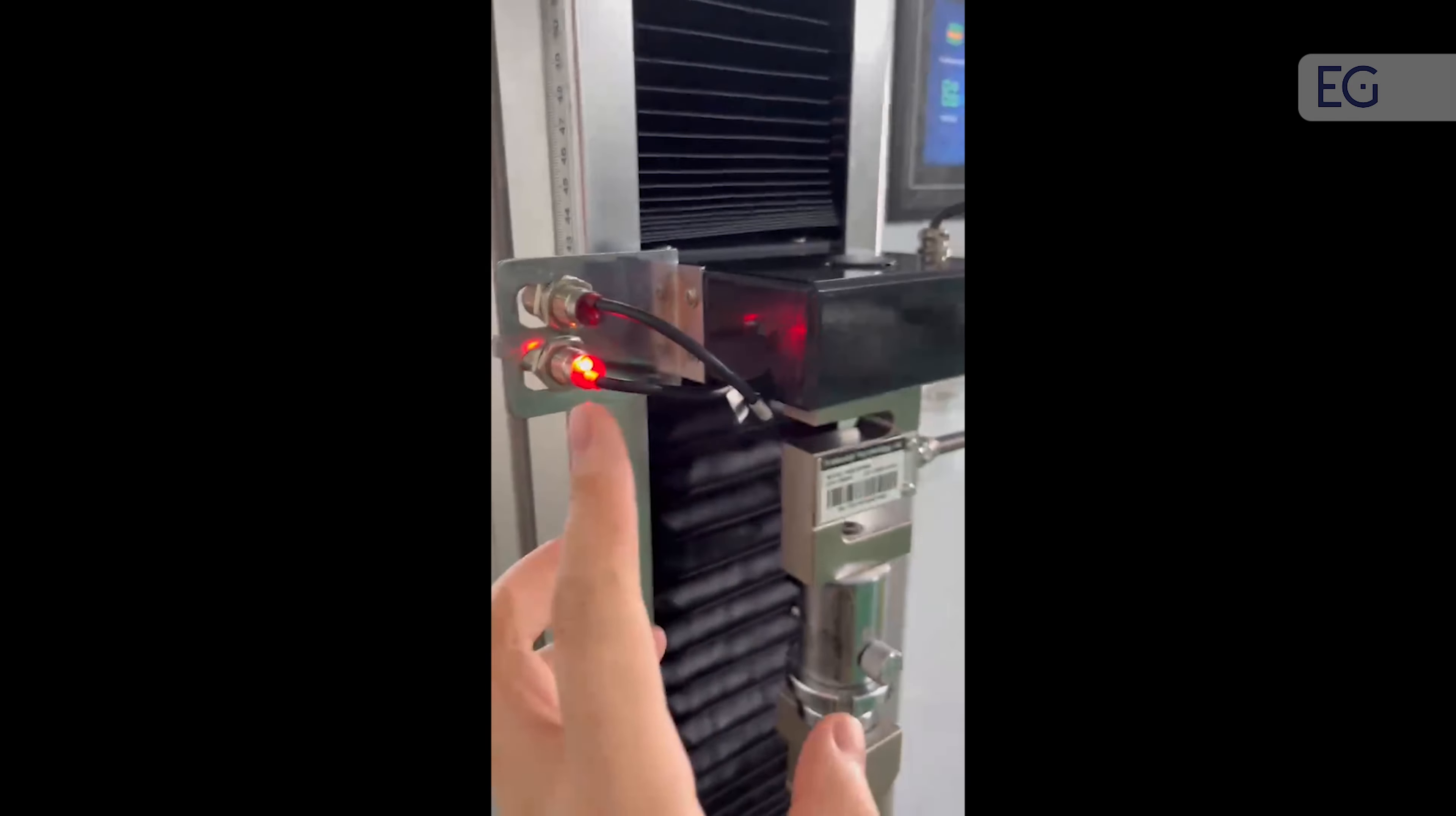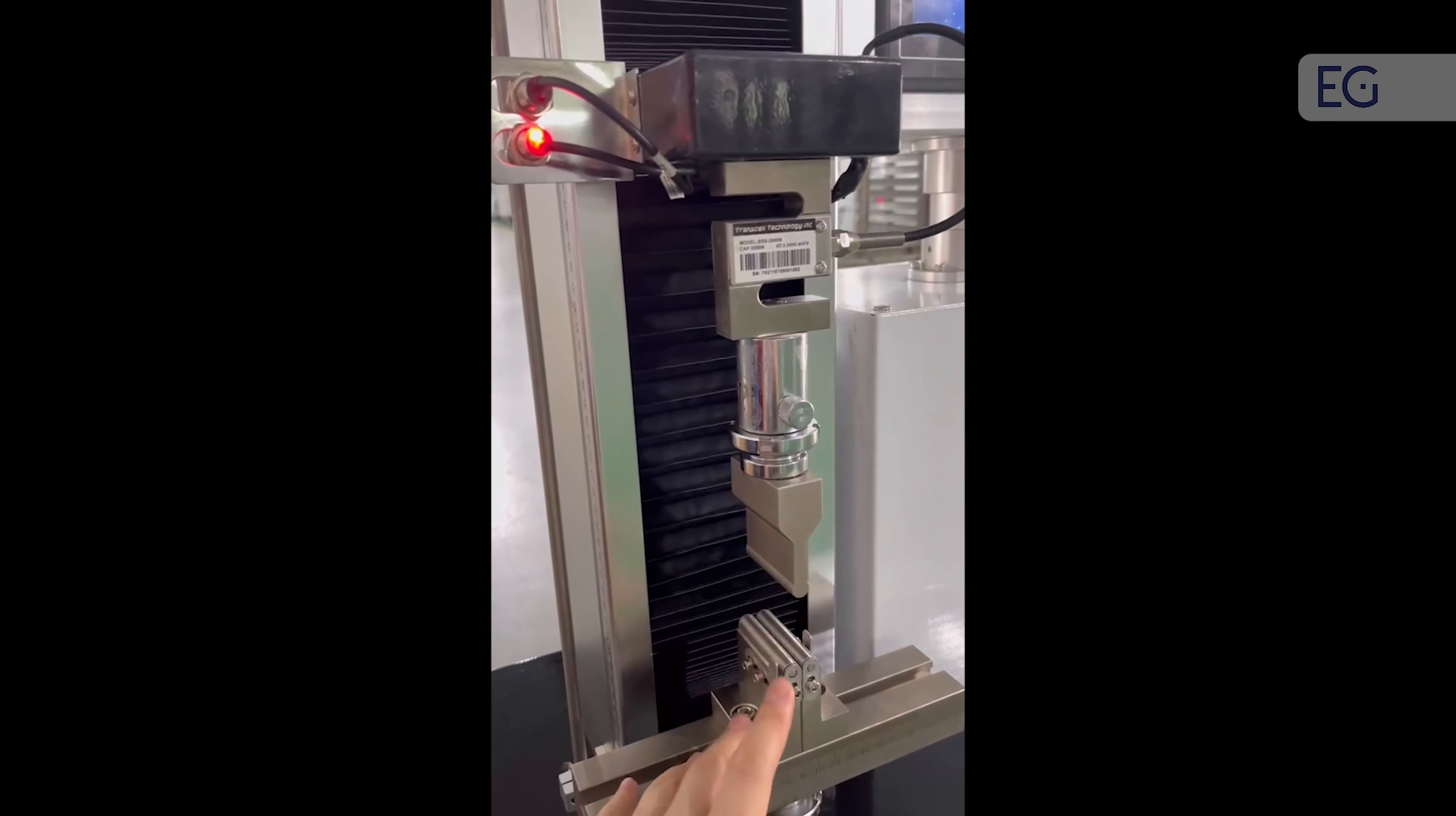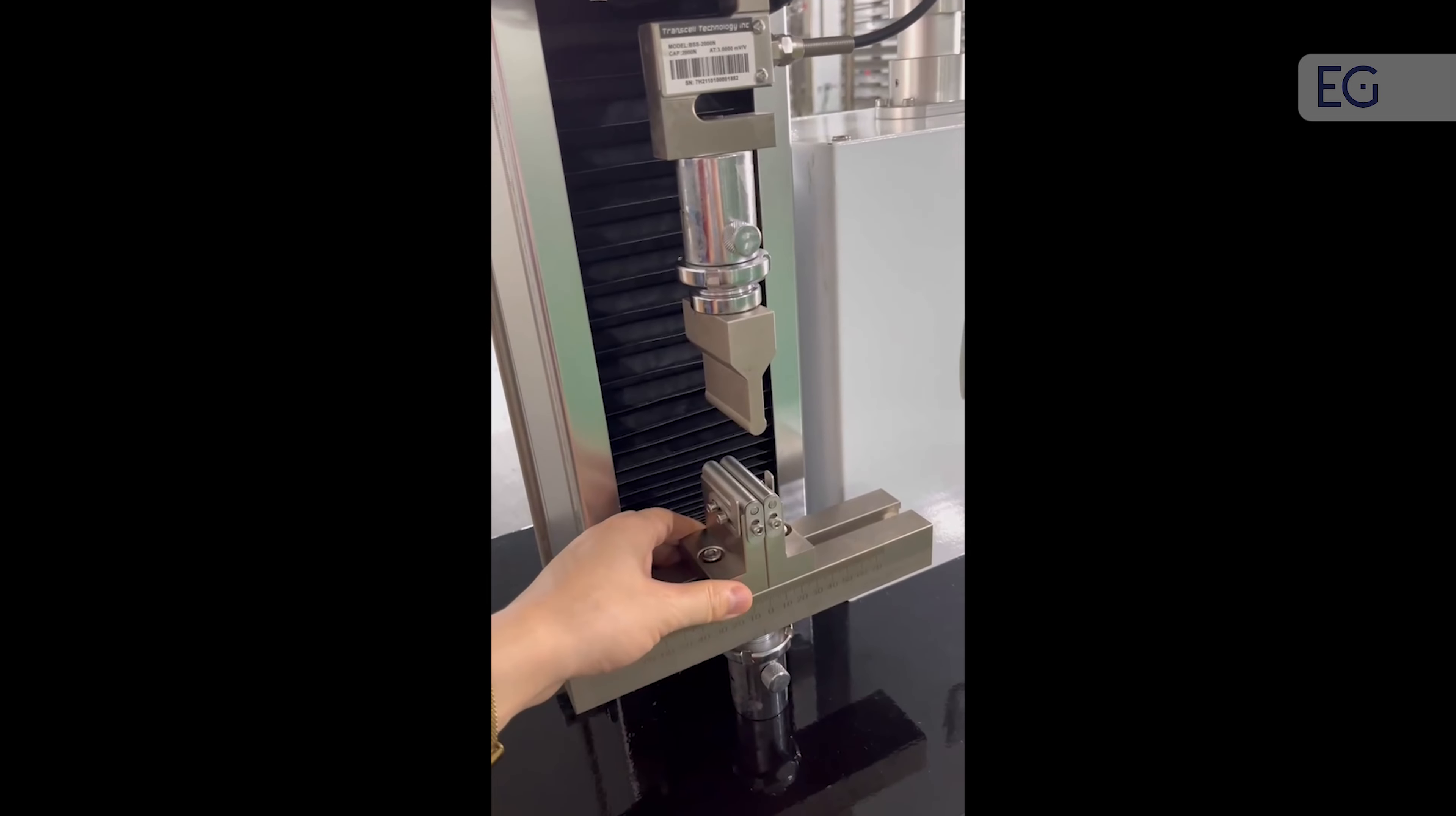When this place closes to the limit switch, it will automatically stop to avoid the two clamps keeping together and damaging the load cell. This is the three-point bending clamp.